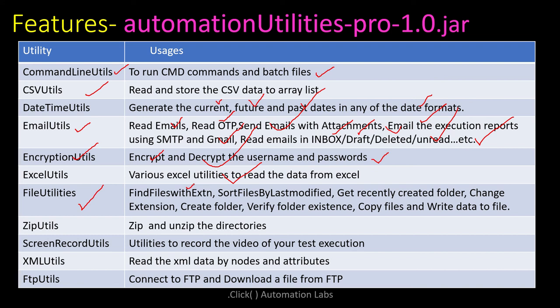File Utilities contains reusable methods written based on real-time needs. Whenever I'm assigned to a new project, I found myself rewriting or copy-pasting the same methods repeatedly. So I decided to make a reusable library that multiple people can share. Methods include: find files by extension, sort files by last modified date, get recently created folder, change file extension, create folders, verify whether folders or directories exist at a particular path, copy files from one location to another, and write data to a file.